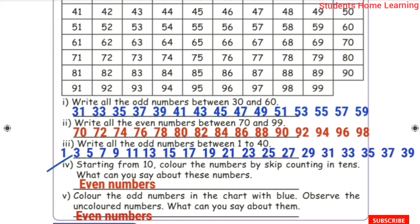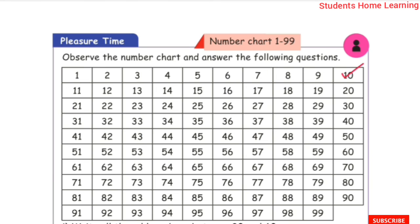Starting from 10, color the numbers by skip counting in 10s. What can you see about these numbers? All the colored numbers are: 10, 20, 30, 40, 50, 60, 70, 80, 90. All these skip-counting-by-10 numbers end in 0, so they are all even numbers.